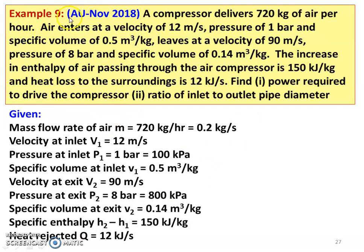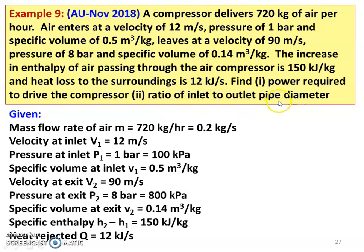Next question — example number 9 from the November 2018 question paper. A compressor delivers 720 kg of air per hour. The air enters at a velocity of 12 meters per second, pressure 1 bar, and specific volume 0.5 m³/kg. It exits at a velocity of 90 m/s, pressure 8 bar, and specific volume 0.14 m³/kg. The increase in enthalpy of air passing through the compressor is 150 kJ/kg. The heat loss to the surroundings is 12 kJ/s. Find the power required to drive the compressor and the ratio of inlet to outlet pipe diameter.